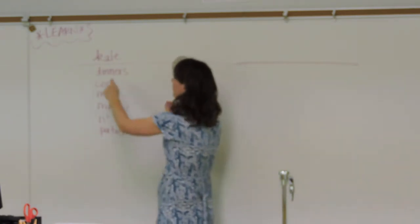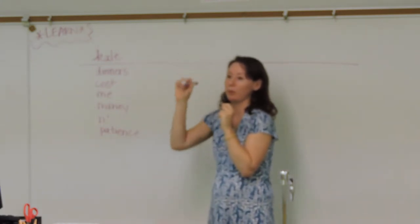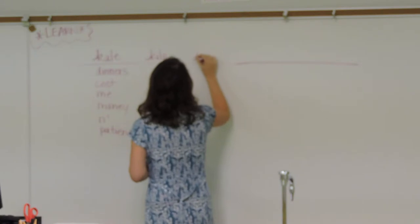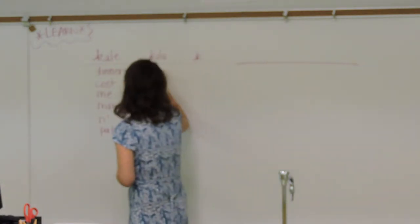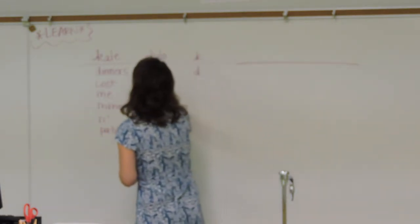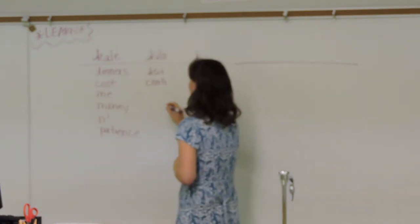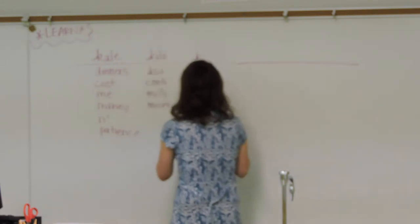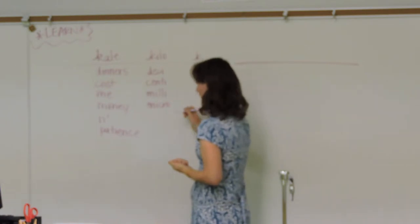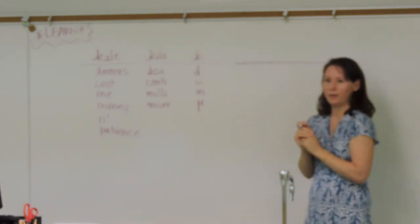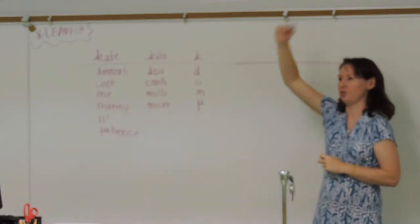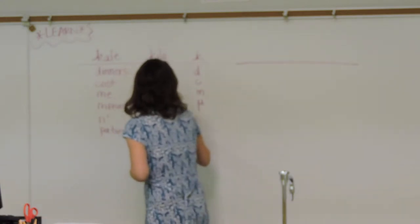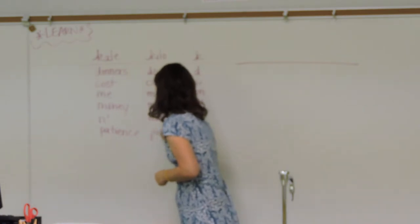What does the mnemonic stand for? Note that 'k' is lowercase — not to be confused with uppercase K for Kelvin. K stands for kilo, symbol lowercase k. D stands for deci, lowercase d. C stands for centi, lowercase c. M stands for milli, lowercase m. The other M stands for micro — since lowercase m is taken, micro uses the Greek letter mu. N stands for nano, lowercase n. And P stands for pico, lowercase p.